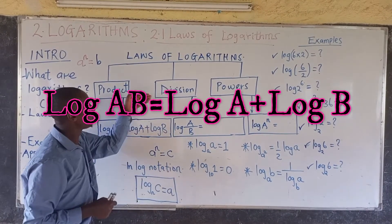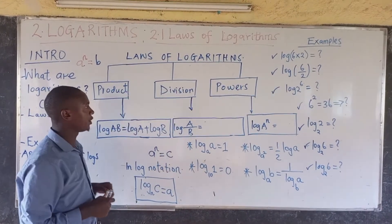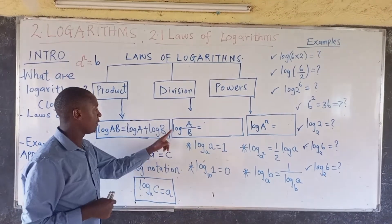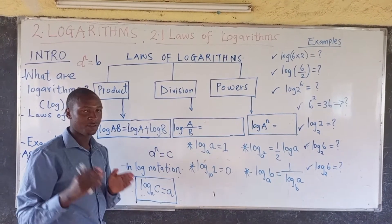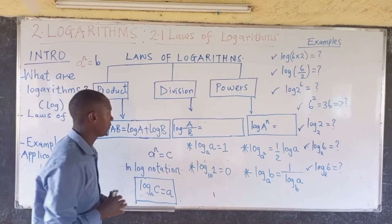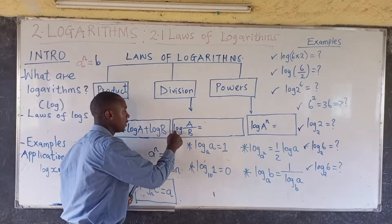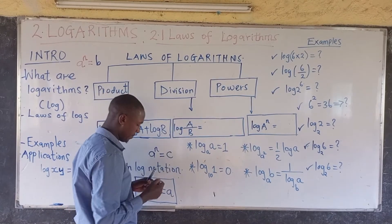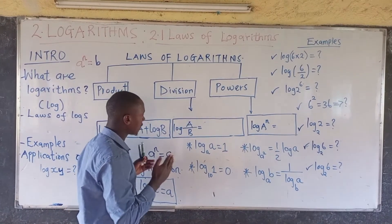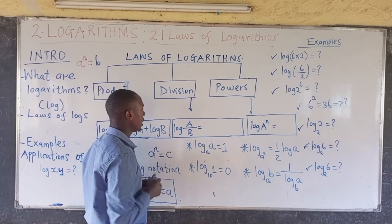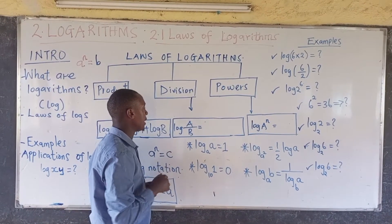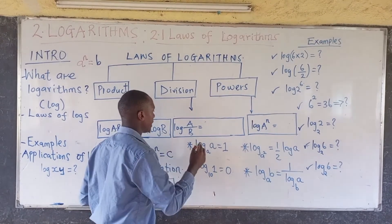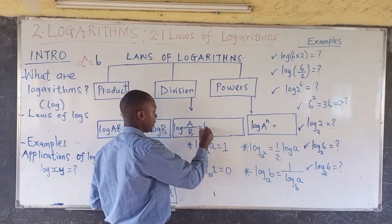In the second law, if you have two numbers that have been divided — for example, log of A divided by B — the result is going to be log of A minus log of B.